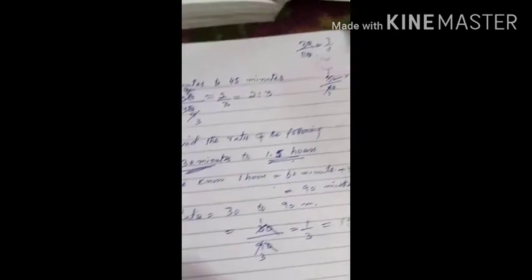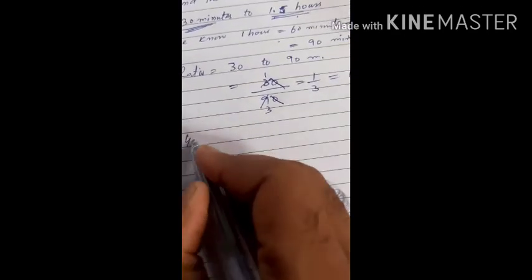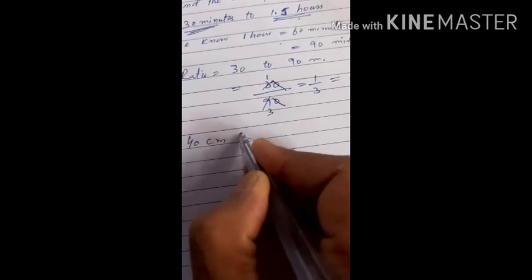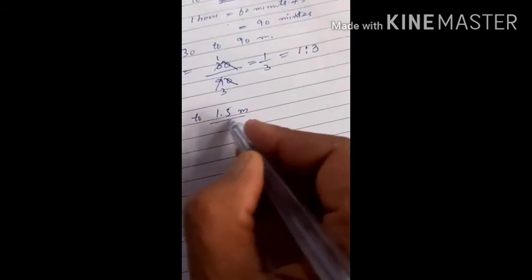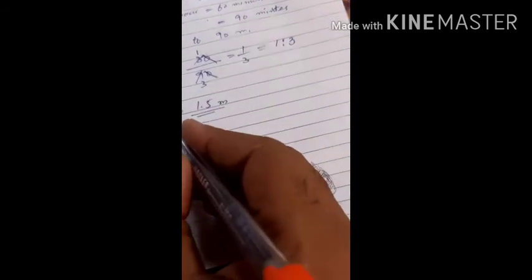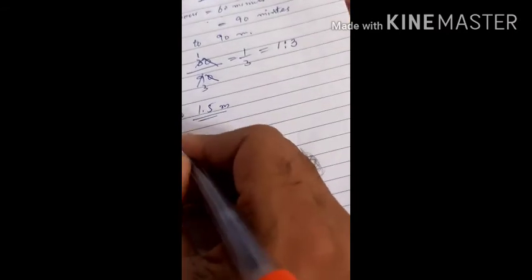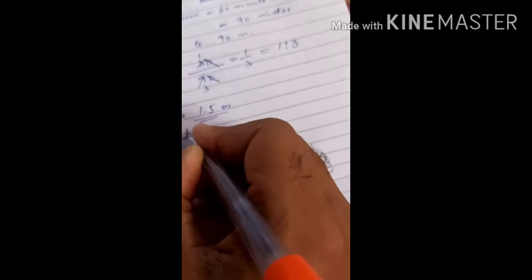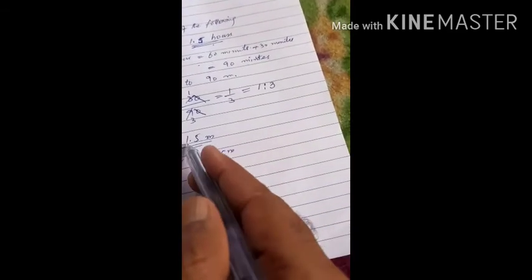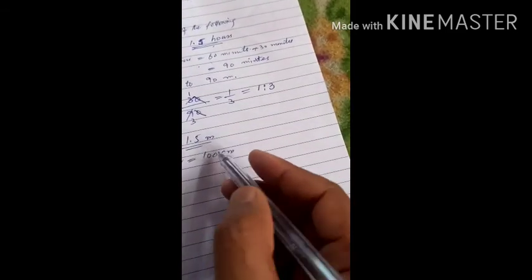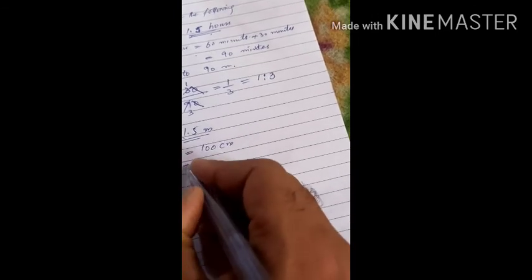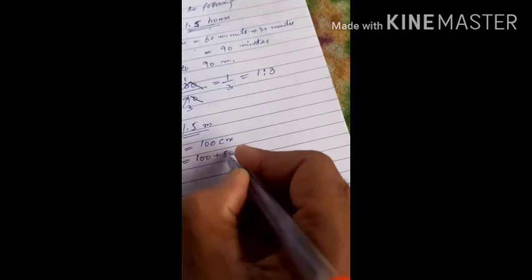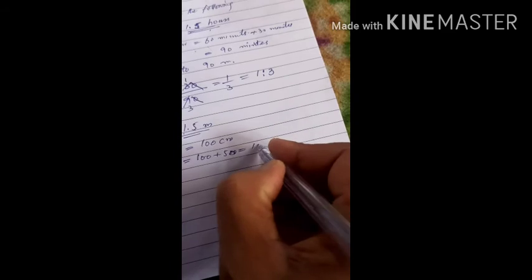Similarly, part b is 40 centimeters to 1.5 meters. This is in centimeters and this is in meters, so we will first convert meters to centimeters. One meter is equal to 100 centimeters. 1.5 meters equals 150 centimeters: 100 plus 50, which is equal to 150 centimeters.